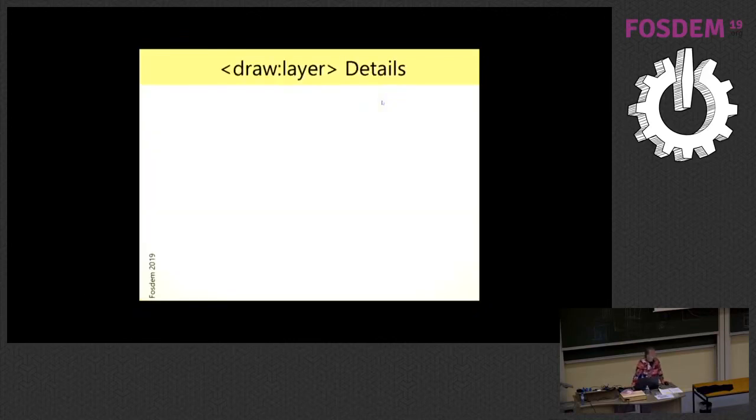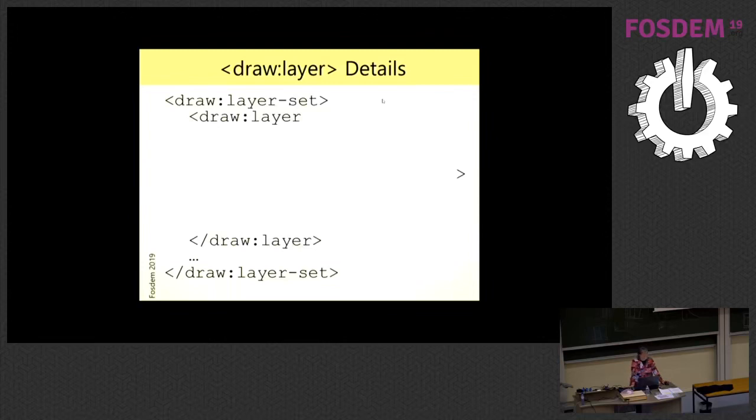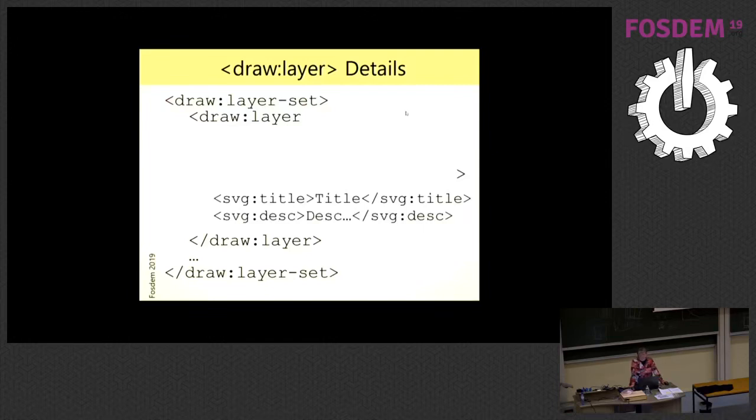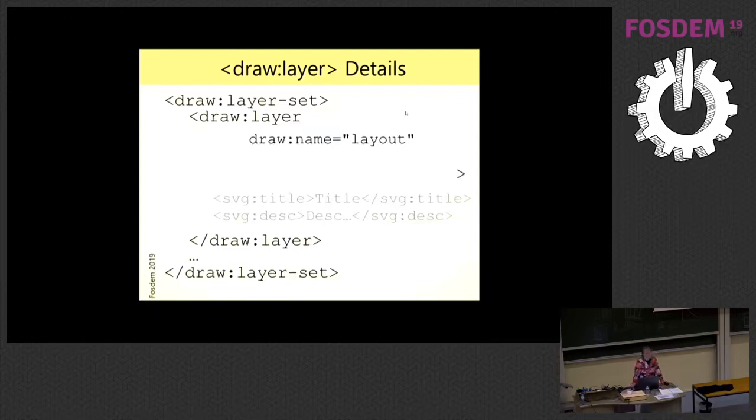ODS has an element layer-set to store the information. This element is a pure container without any attribute. It holds the information of layers. We have a layer element. There can be, of course, a lot of layers in such a layer set. The layer element has some attributes and two child elements. The child element holds the title and the description. That is not relevant here, but the attributes. There is a name attribute that is used to identify the layer and therefore it has to be unique inside this layer set.